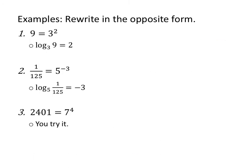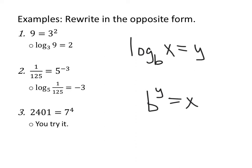Remember that log base b of x equals y is the same as b to the y equals x. Keeping this in mind, if we look at 9 equals 3 squared, then 2 is the power — all the log is is an exponent — so 2 is the power to which I raise 3 in order to get 9. For 1 over 125 equals 5 to the negative 3, negative 3 is the power I put on 5 in order to get 1 over 125, so log base 5 of 1 over 125 equals negative 3.